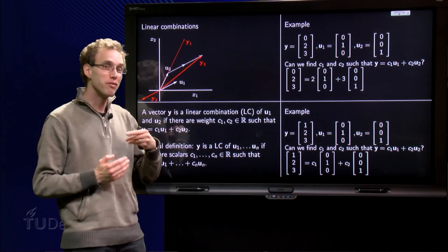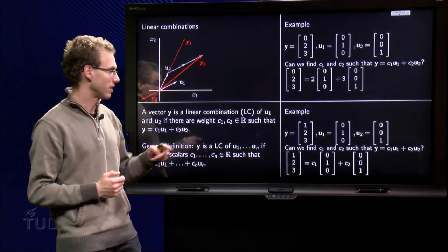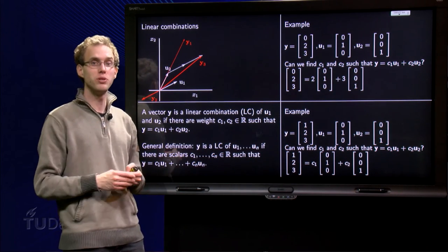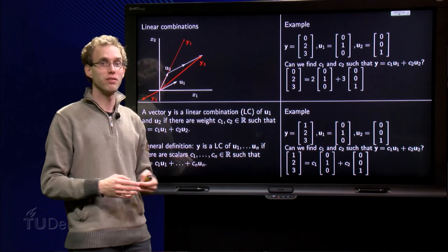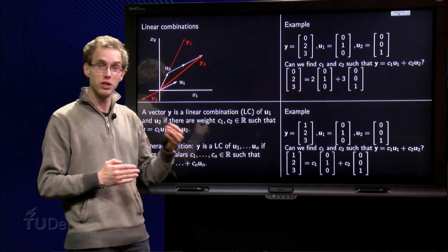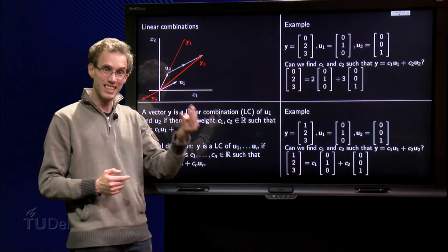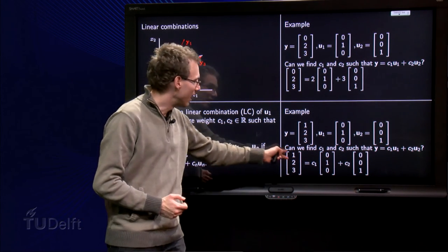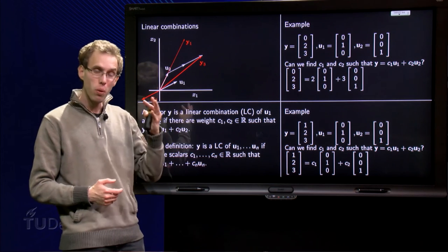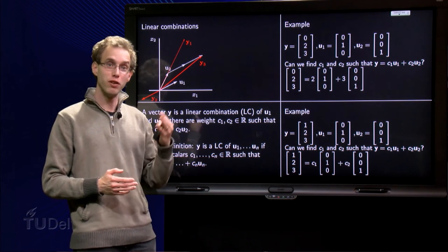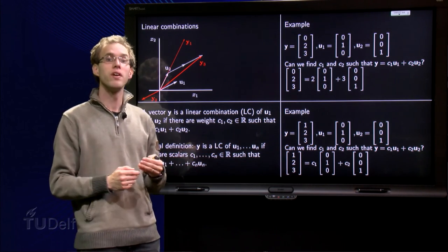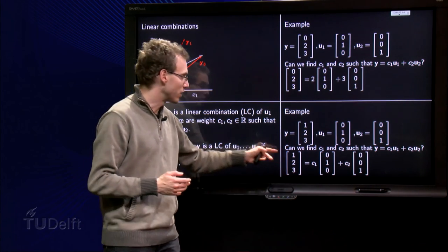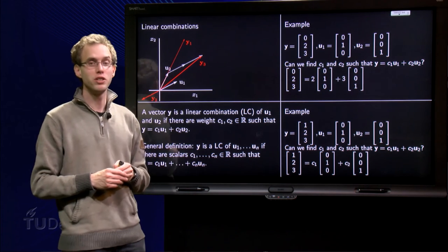But now look at the first component of both vectors. On the right hand side we have 0 times c1 plus 0 times c2, so irrespective of what we take for c1 and c2, we always get 0 as first component on the right hand side. On the left hand side, though, we have a 1, so on the left hand side we have 1, on the right hand side 0, that will never be equal. So, this y is not a linear combination of u1 and u2.